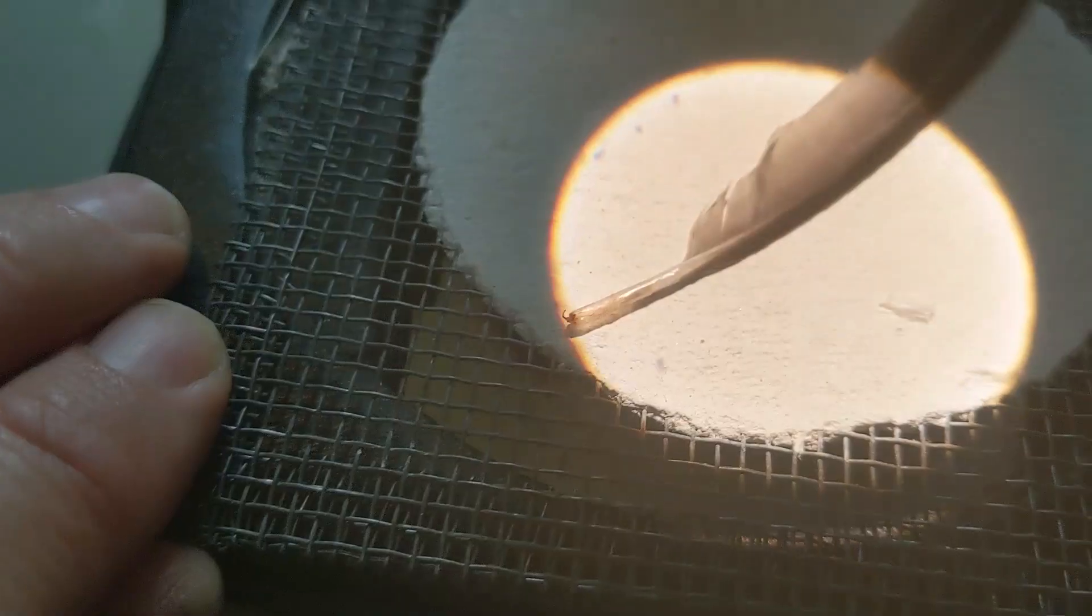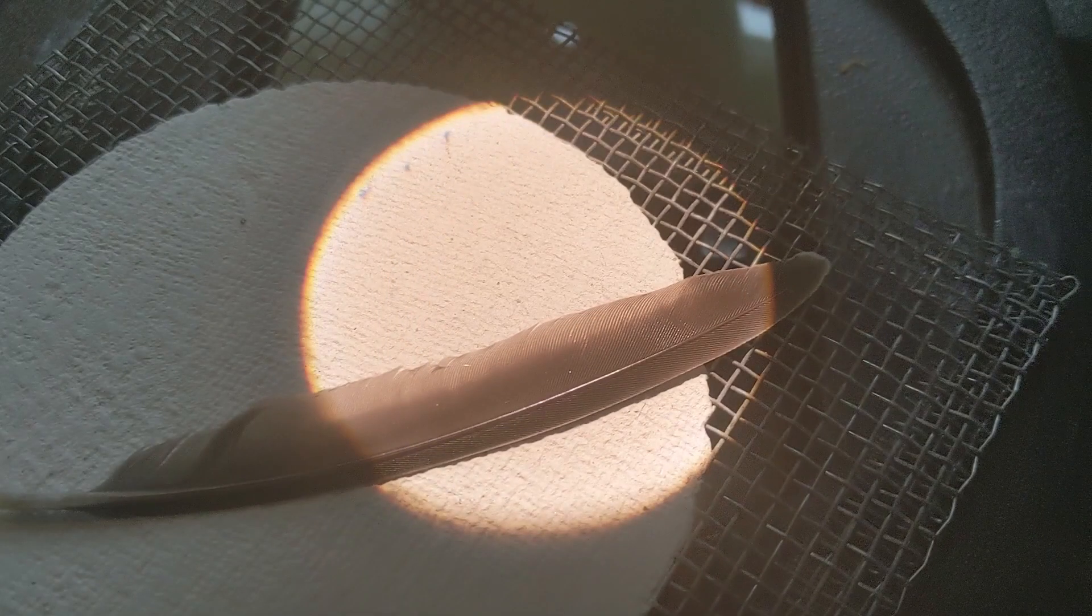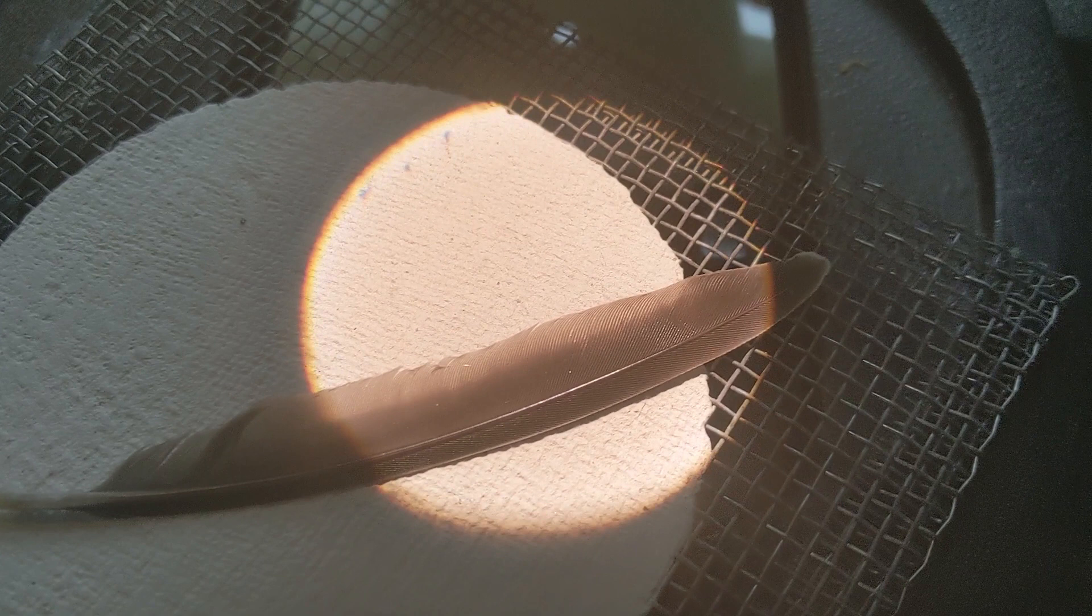Today we're going to take a look at a couple of feathers. This is a primary feather, a flight feather from the wing, and you'll notice that there's a shaft there. It's not quite in the middle, is it?